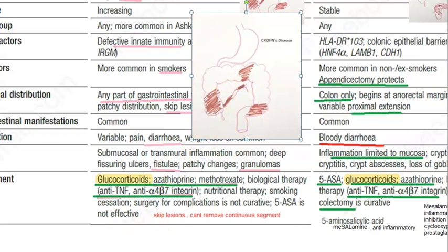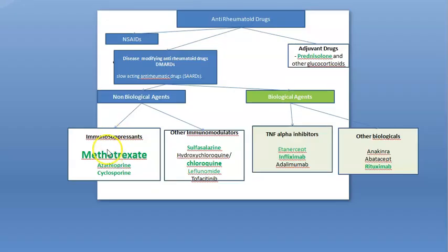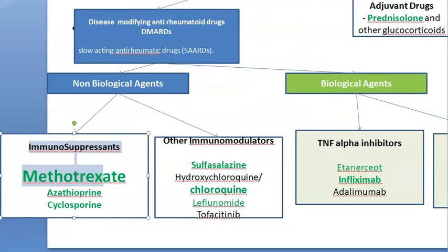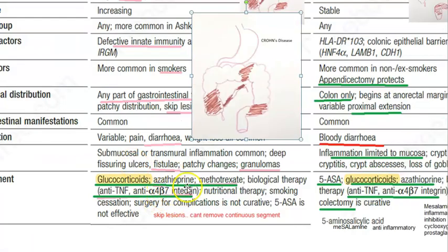You will have to give this person glucocorticoids — that is steroids. And then you will give azathioprine and methotrexate. These are immunomodulators — actually immunosuppressants. You have seen this in DMARDS. So methotrexate and azathioprine are immunosuppressants.